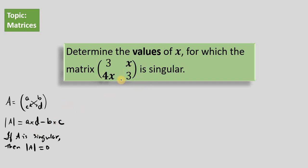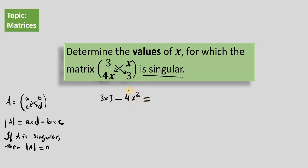We're told that this particular matrix with these components is singular. Therefore, we need to work out the determinant, and once we work out the determinant, we will equate that expression to 0. We're going to multiply A times D, which is 3 times 3 in this case, and subtract x times 4x, which is 4x squared. Since the matrix is singular, its determinant equals 0, so we simplify this to 9 minus 4x squared equals 0.